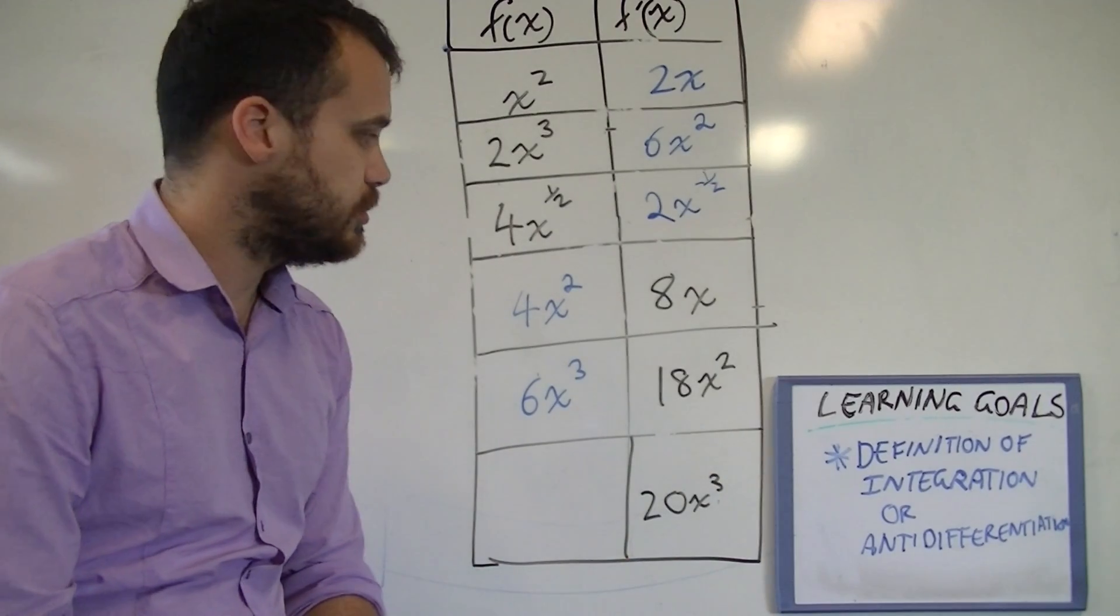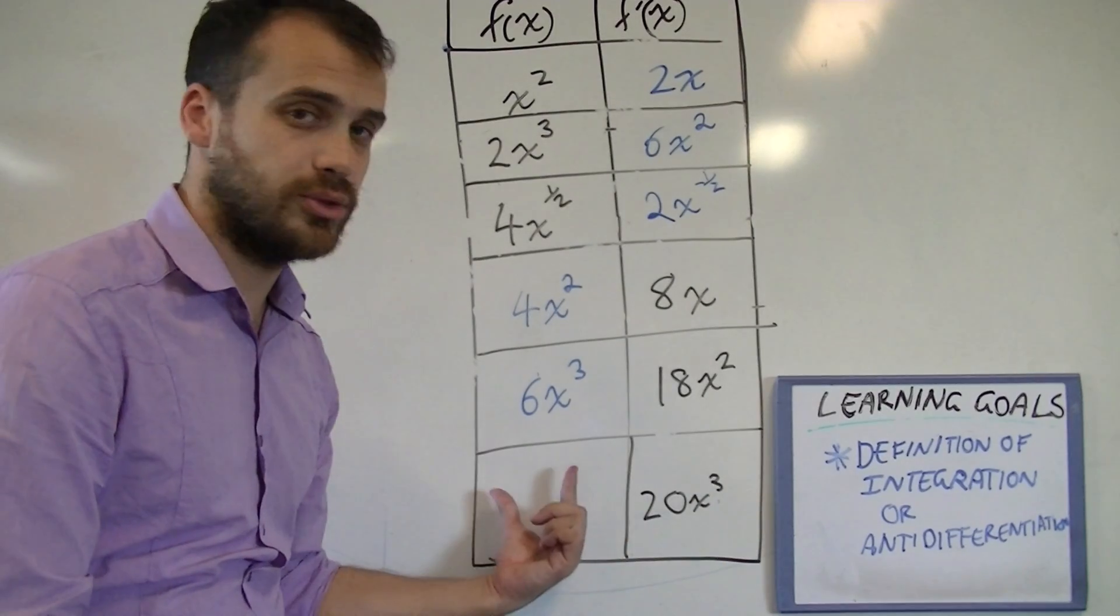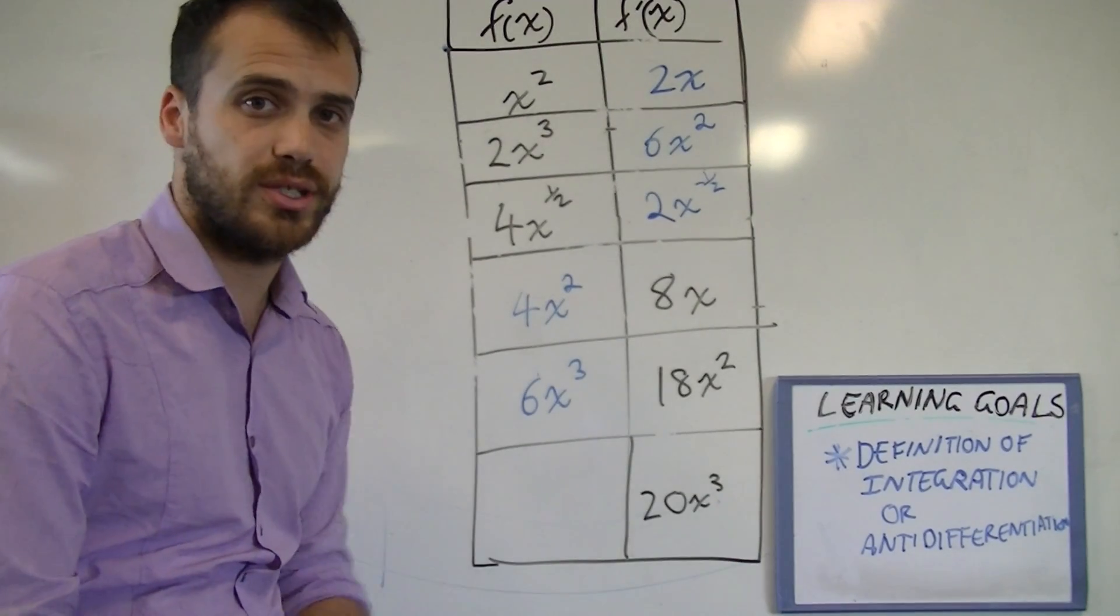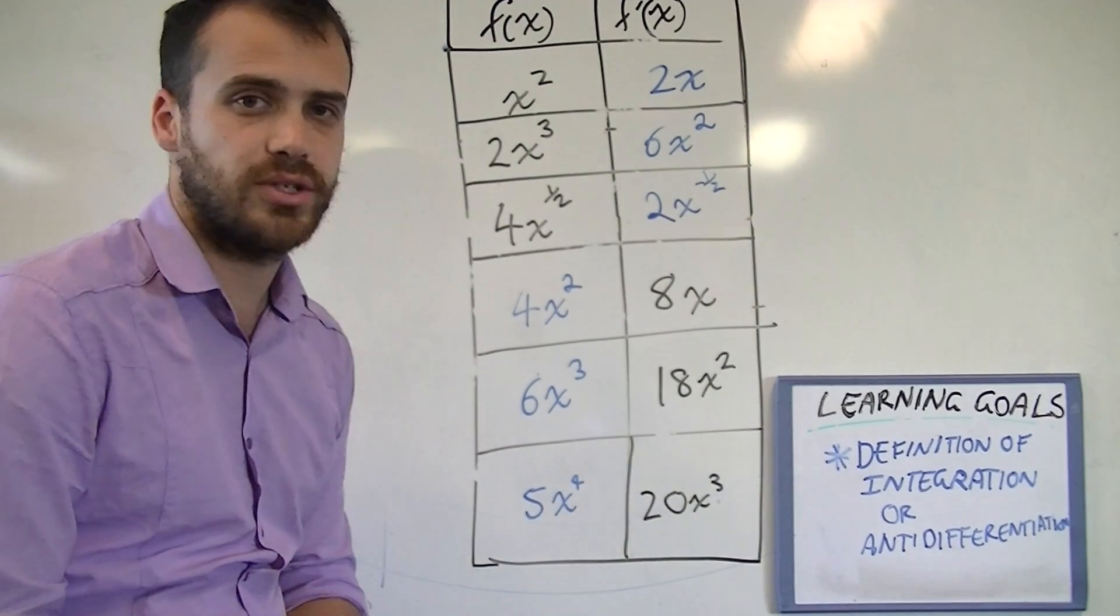And finally, 20x cubed. What would the integral or the anti-derivative of 20x cubed be? 5x to the 4.